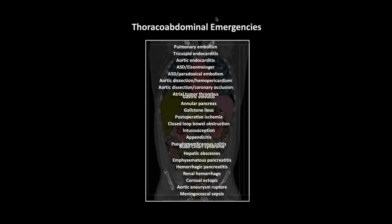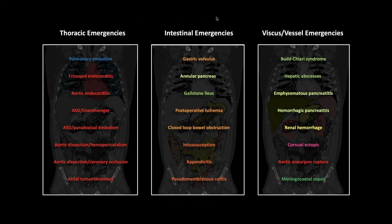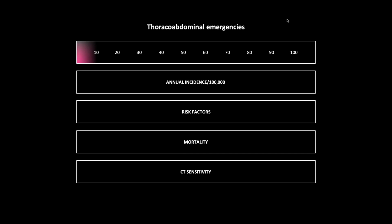Thoraco-abdominal emergencies. I like to color code things by organ. The first group are thoracic emergencies, the next group intestinal emergencies, and lastly viscous and vessel emergencies. If you've seen my presentations before, they're usually just straight case presentations, but I thought some additional information about the pathologies we'll be viewing would be helpful.